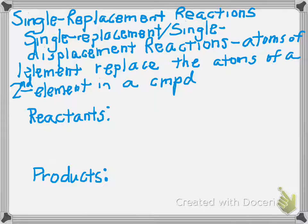When we talked about this on the chem quest, we noted that we can't put two metals together because they both have positive charges, and we can't put two non-metals together because they both have negative charges. When we form a compound — especially an ionic compound — it must be made of a metal and a non-metal.